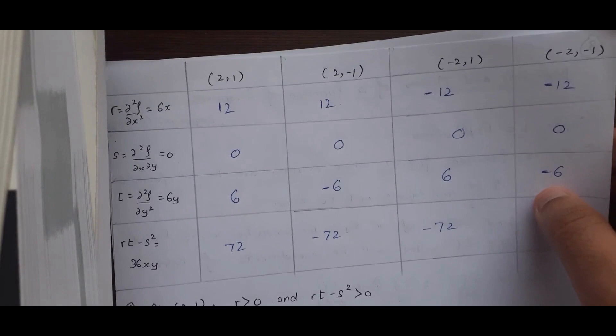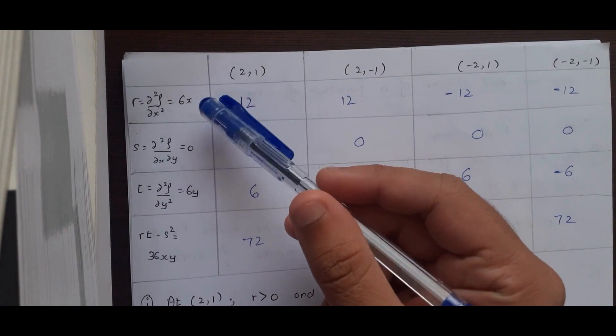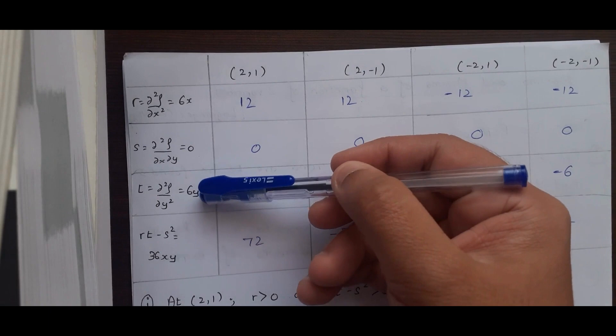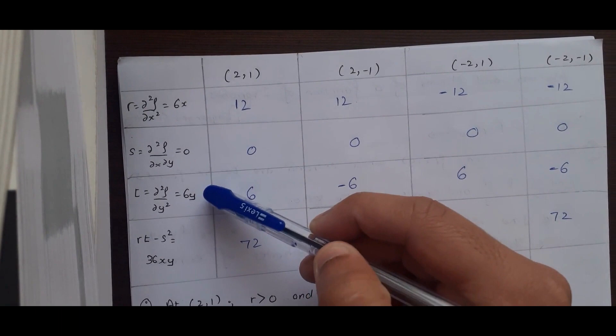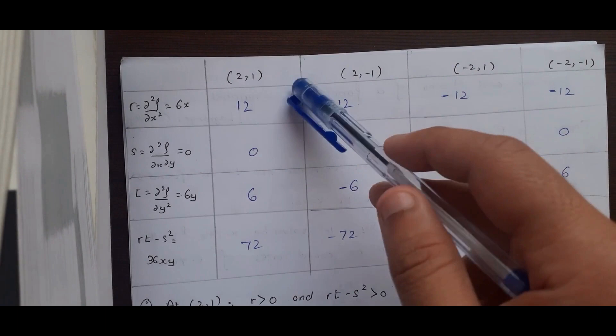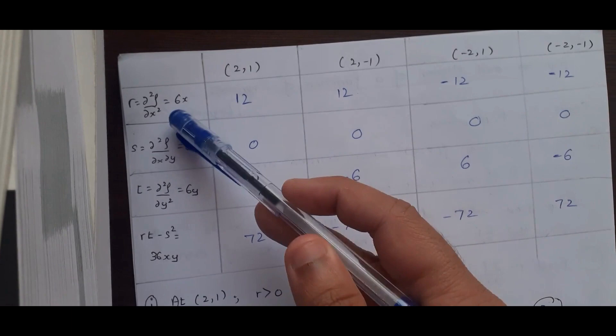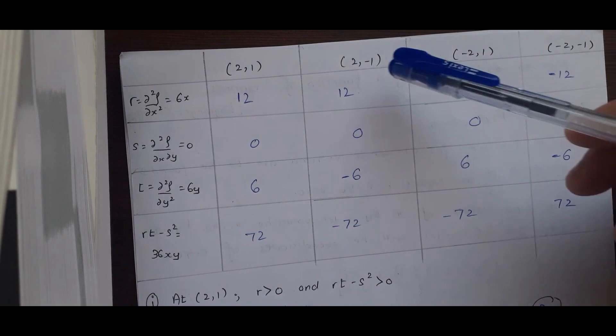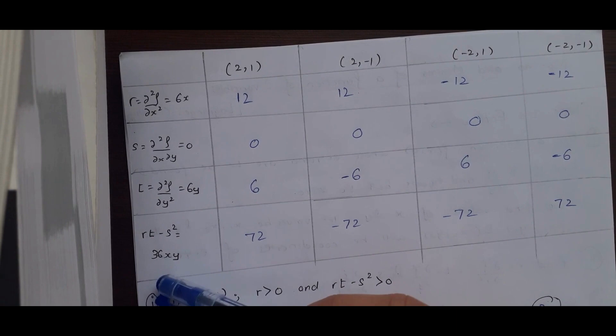We make a table to keep things organized. We have r, which is the double derivative with respect to x of f(x,y). s is the mixed derivative with respect to x and y. t is the double derivative with respect to y. Then rt minus s². So r × t becomes 6x times 6y, minus s² which becomes 0. We take each point — substituting x = 2 for the first two points and x = −2 for the last two, and y values accordingly — and compute rt − s² = 36xy, giving us the four values.